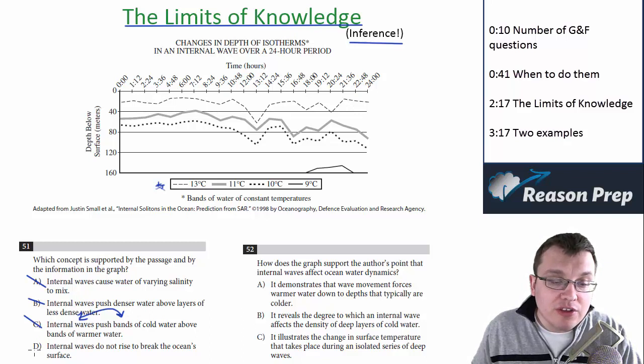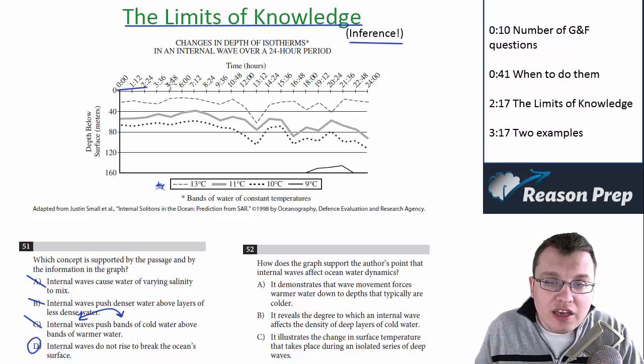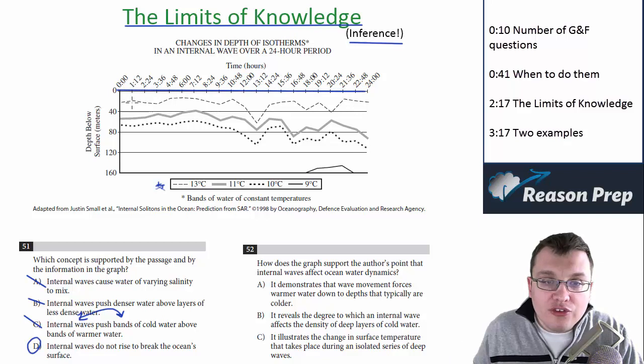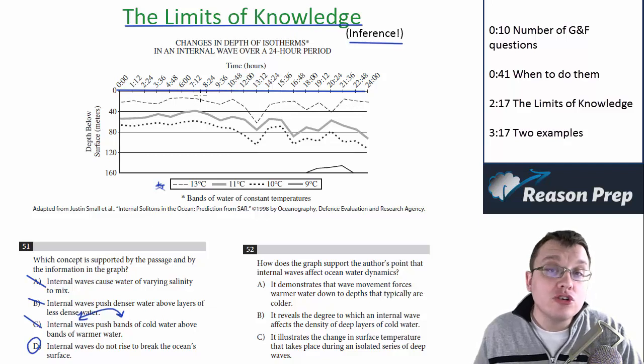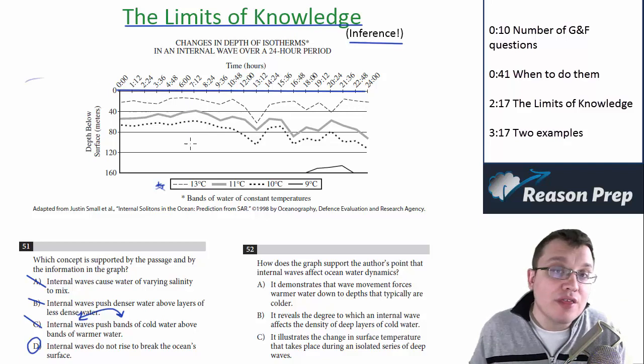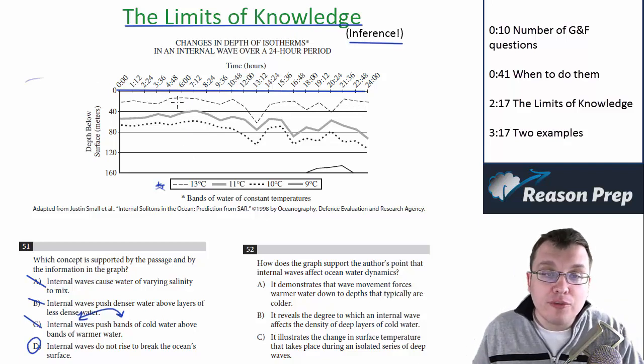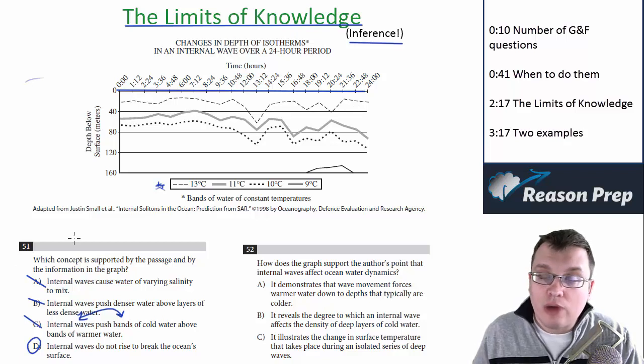So the answer was D: 'Internal waves do not rise to break the ocean surface.' Not only was this mentioned explicitly in the passage, but we can see based on the graph, this graph doesn't show any of these waveforms breaking through the surface. So we can assume, based on what's supported in the figure, even though the figure doesn't say anything explicitly about this, we can infer just one step beyond what's in the graph that these waves are not going to break the surface. That's why we go with D.